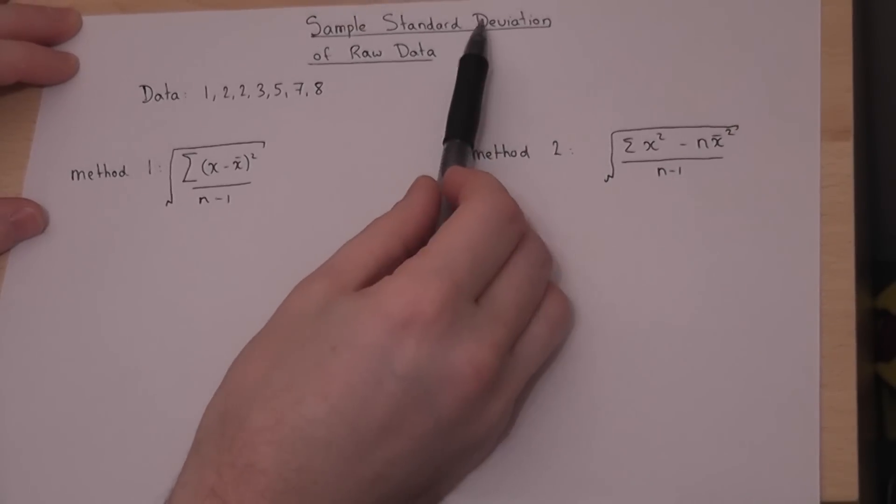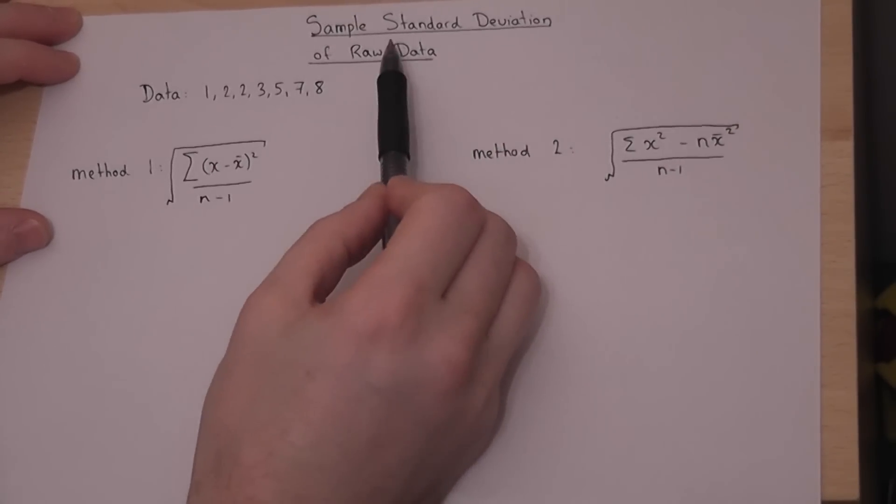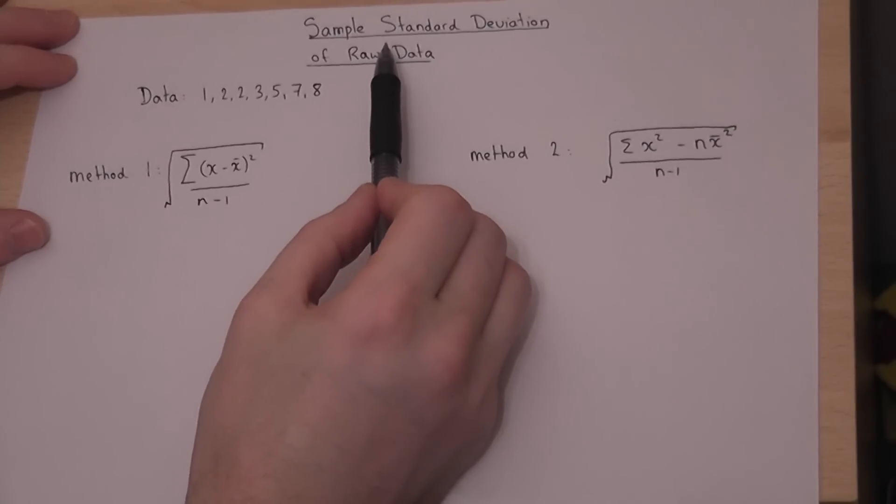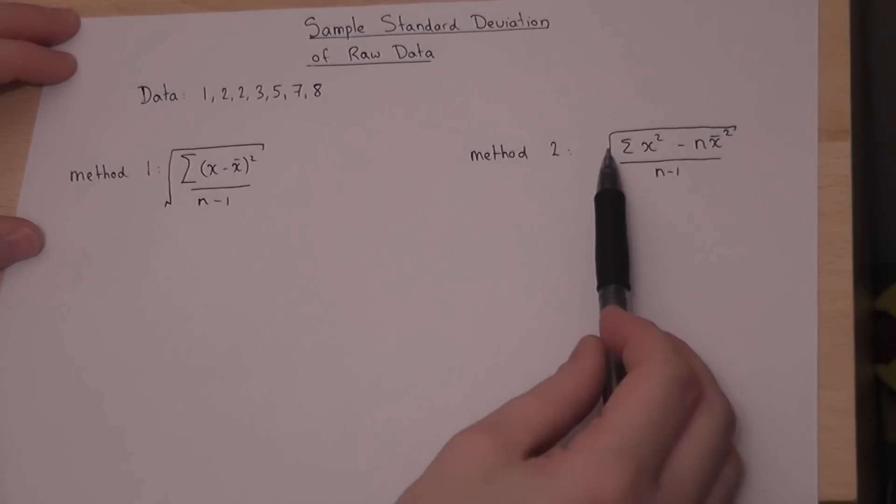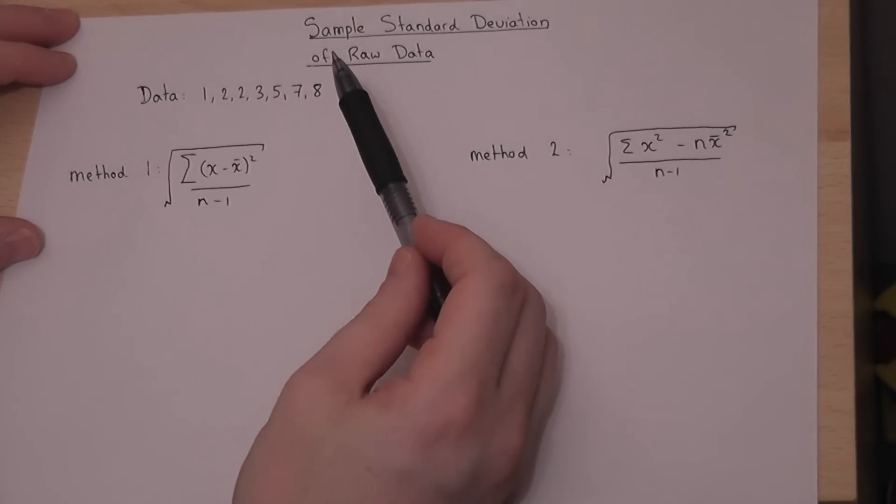The sample standard deviation of a set of raw data represents the spread of that data, and this video presents two methods to find the sample standard deviation.